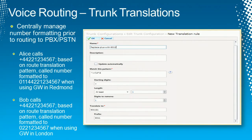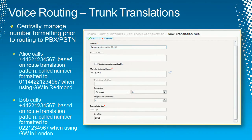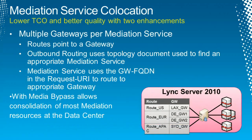Voice routing: we got a lot of feedback from customers prior to this release — we didn't really have the capability to do trunk translations. For example, if Alice dials a number (like a UK +44 number), after we decide to route the call to a specific gateway, we can look at that gateway and apply rules — such as stripping digits or adding a prefix — because some gateways want numbers in a different format than E.164. Previously customers had to configure this on the gateway itself; now we support doing it centrally in Lync, and you can do different manipulations based on who's calling since they can egress to a different trunk.